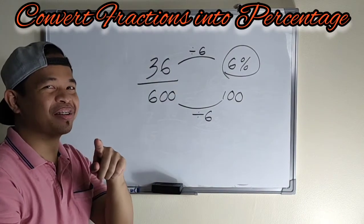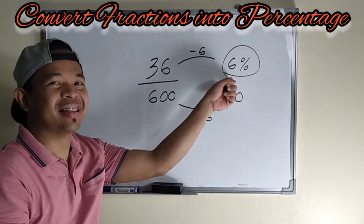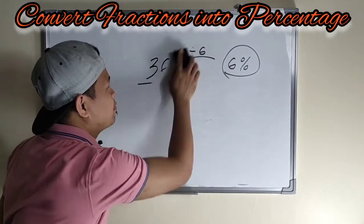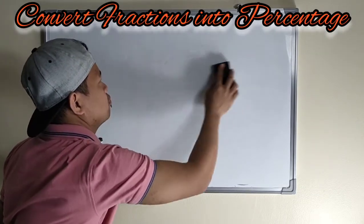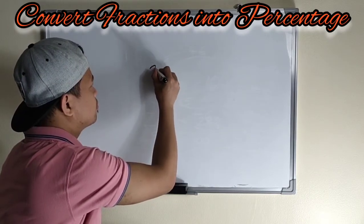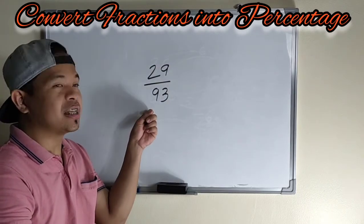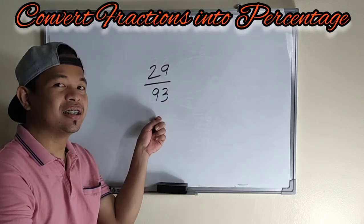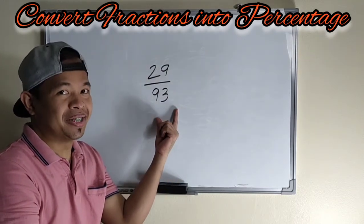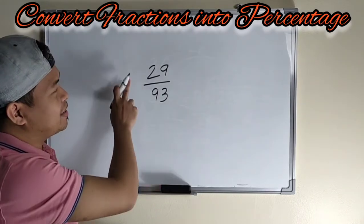You can try on your calculator po kung gusto nyo malaman kung tama ba yung sagot natin. So let's have one more example. So 29 over 93. In this case, may hihirapan tayong kunin kung ano pwede bang i-multiply sa 93 to get 100.